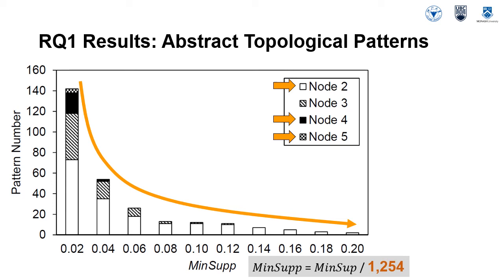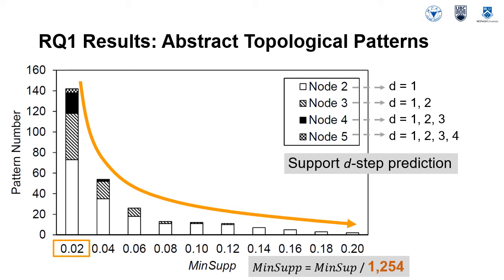This result indicates that topological patterns, even in terms of stereotype roles, are not frequently occurring in the dataset. Node 2 patterns account for more than half of the patterns across various minimum support values. Node 5 patterns disappear when minimum support is greater than 0.04, while node 4 patterns disappear when minimum support is greater than 0.06. To capture adequate topological patterns for prediction, we use those patterns for which minimum support equals 0.02 in the experiments hereafter.